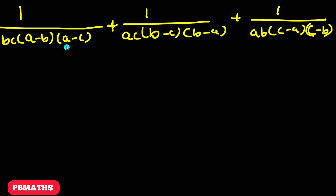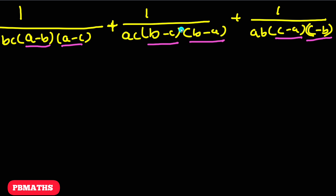As you can see, in the first term we have (a minus c), but in the third term we have (c minus a). So let's try to convert (a minus c) into (c minus a). Similarly, we have (b minus c) in one term but (c minus b) in another, and (a minus b) in one term but (b minus a) in another. So let's first make these denominators have the same expressions so that we can find the LCM easily. For that, let's multiply both numerators and denominators by minus 1 for each of these three expressions.